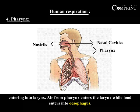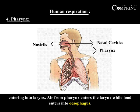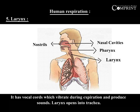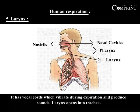Air from the pharynx enters the larynx while food enters into the esophagus. Larynx is generally called the voice box. This is the upper part of the trachea. It has vocal cords which vibrate during expiration and produce sounds.